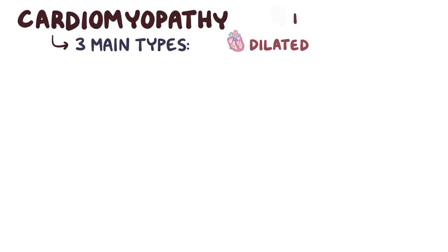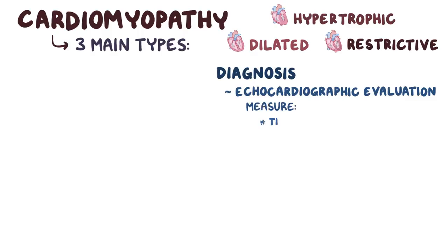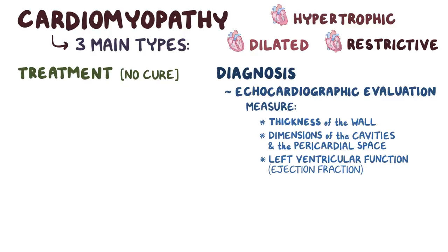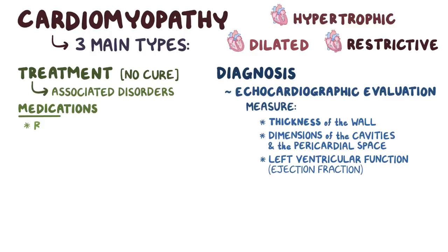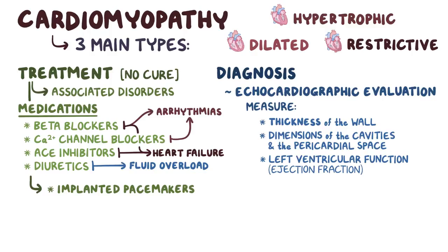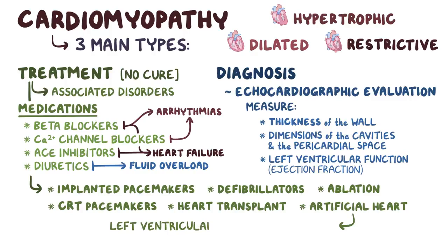As a quick recap, there are three main types of cardiomyopathy: dilated, hypertrophic, and restrictive. Diagnosis relies primarily on echocardiographic evaluation, measuring wall thickness, cavity dimensions, pericardial space, and left ventricular ejection fraction. There is no cure, so treatment involves medications like beta blockers, calcium channel blockers, or ACE inhibitors, plus diuretics for fluid overload. Some individuals get implanted pacemakers, defibrillators, ablation, or CRT pacemakers. Finally, some individuals need a heart transplant or implantation of an LVAD.